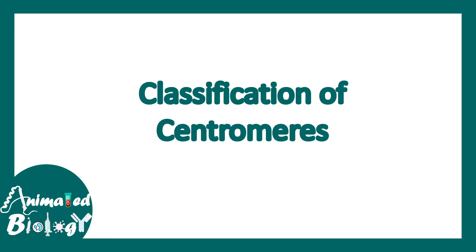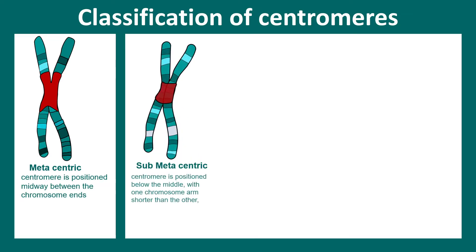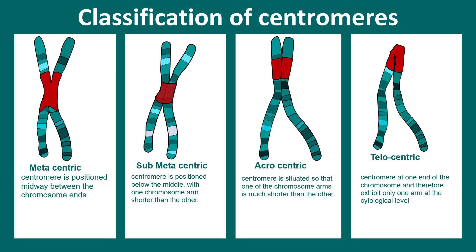Depending on the position of the centromere, chromosomes can be classified into several categories: metacentric, where the centromere is along the middle portion of the chromosome; sub-metacentric, where the centromere is positioned a little bit above or below the midpoint; acrocentric, where the centromere is situated towards one end so that one arm is much bigger than the other; and telocentric, which is generally not found in eukaryotes, where the centromere is located at one end of the chromosome.